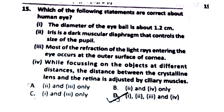Question 15: Which of the following statements are correct about the human eye? First: the diameter of the eyeball is about 1.2 cm — this is wrong, the correct diameter is 2.4 cm. Second: Iris is a dark muscular diaphragm that controls the size of the pupil — this is correct. Third: most refraction of light rays occurs at the outer surface of the cornea — this is also correct. So the first statement is incorrect.